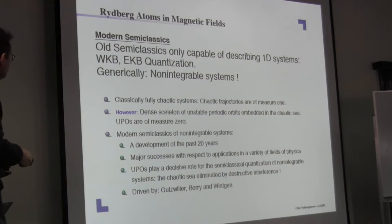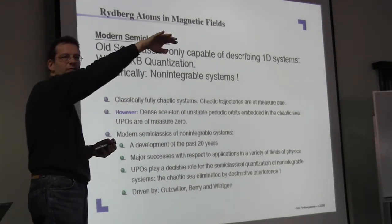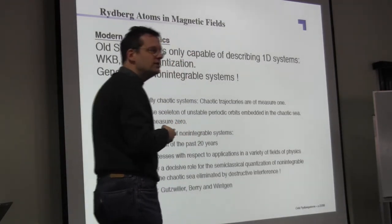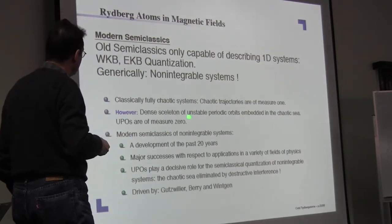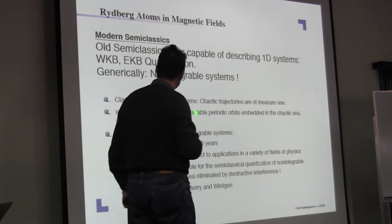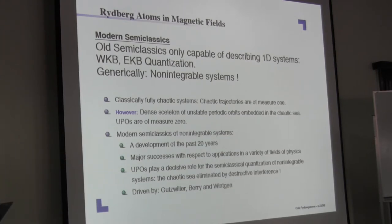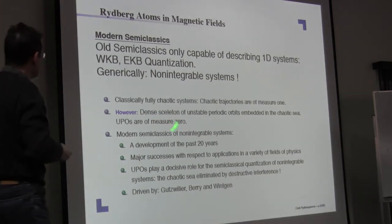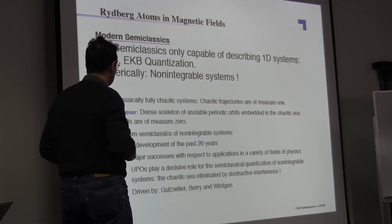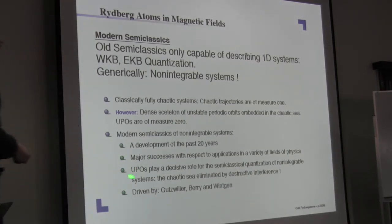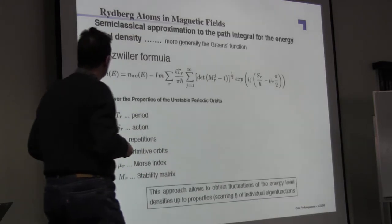So what you see is only the chaos. And that's why it was so hard to understand non-integrable systems from a classical point of view, from a semi-classical point of view. But the essence is that these unstable periodic orbits are responsible for the semi-classical properties of a system. It is not all this chaos which is there. It is this measure zero unstable periodic orbits which are responsible for the quantum or semi-classical behavior of a system. So this was a major insight which came over the decades and finally led to something like this.